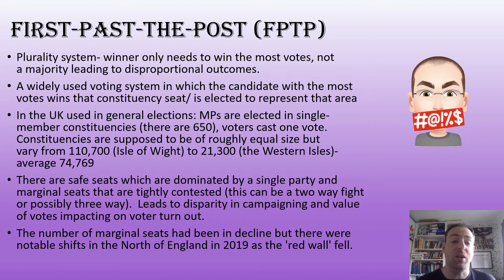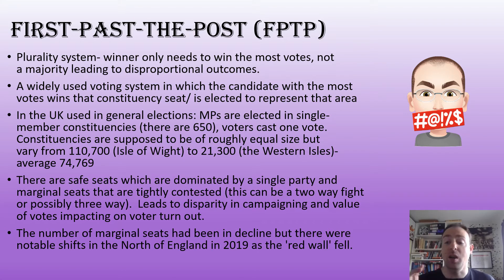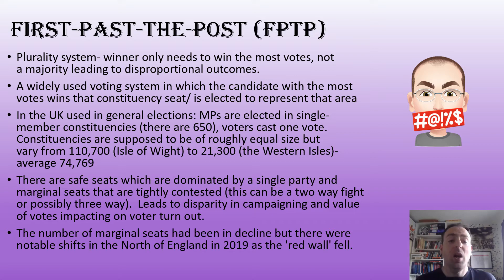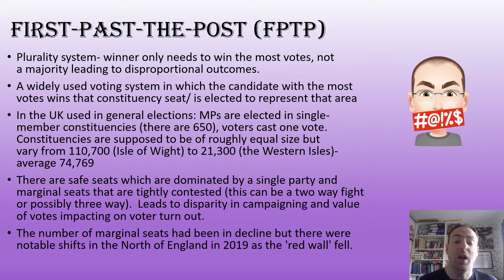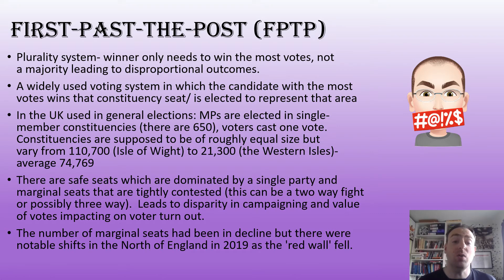The candidate who wins the most votes in that constituency — or seat, or area, however the country divides it — is elected to represent that area. That fits into one of its key strengths: the connection between the area where the representative comes from and the people there who voted for them. It's used in UK general elections. MPs are elected in single member constituencies — there are 650 of them. Voters cast one vote, and constituencies are supposed to be of roughly equal size, with an average of about 75,000.